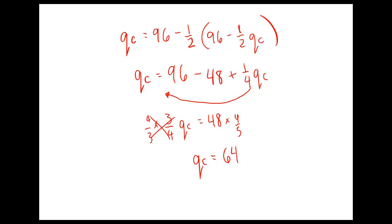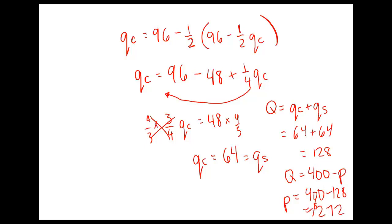That's the same for QS. We're going to plug that into the market demand. Total quantity equals QC plus QS, so that's 64 plus 64 which is 128. When we plug that into the market demand, we get price, so P equals 400 minus 128 which equals 272. Those are our market equilibrium prices and quantities, and we can go one step further and say how much profit each of these firms make.